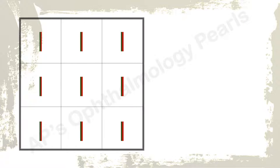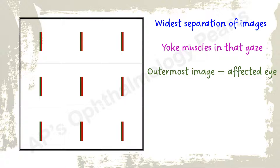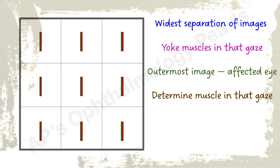So to interpret a diplopia chart: first, determine the gaze in which there is the widest separation of images. That narrows down the weak muscles to the yoke muscles acting in that direction of gaze. Next, determine the outermost image. This is the false image and belongs to the affected eye. Strictly speaking, this is all that is required to identify the involved muscle.